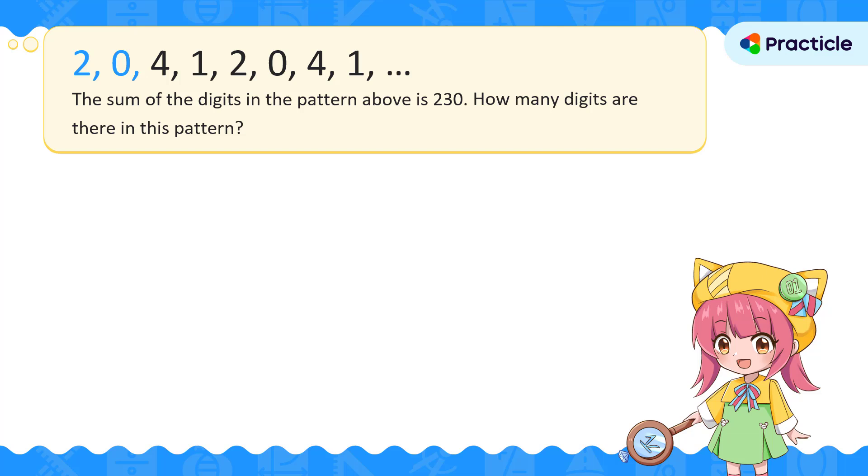Here, we have some numbers. We're given that the sum of the digits in this pattern is 230, and we need to find the number of digits in this pattern. How do we solve such a math problem?